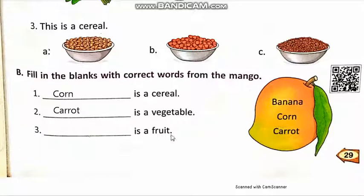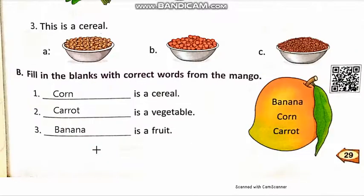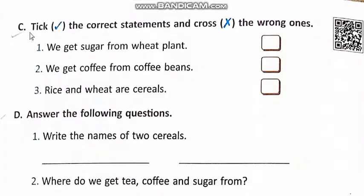Number three: Dash is a fruit. Banana is a fruit. Students, mne yahan pada hai — Banana is a fruit.